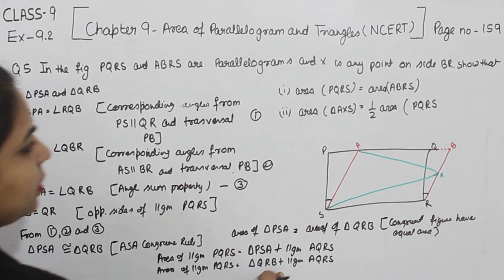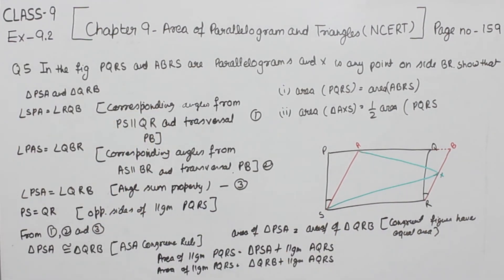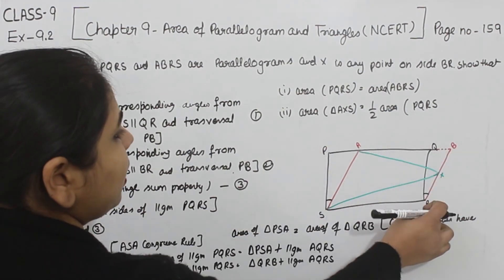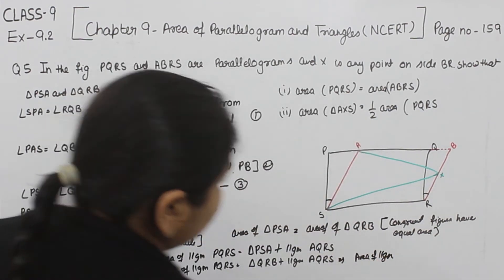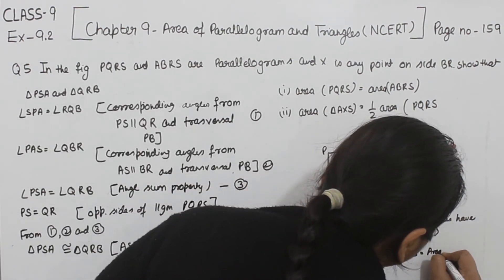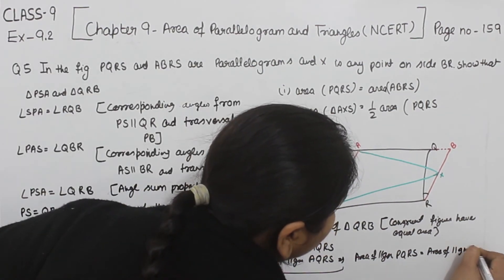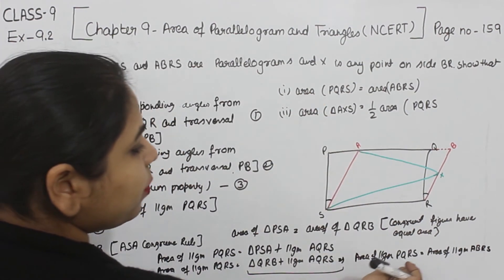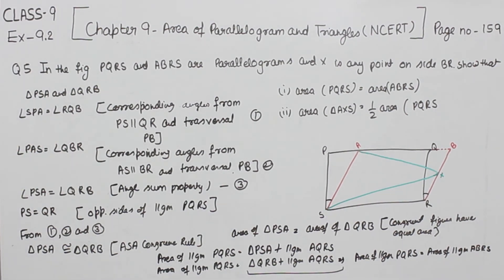Adding triangle QRB and parallelogram AQRS together gives us parallelogram ABRS. Therefore, area of parallelogram PQRS is equal to area of parallelogram ABRS. This is exactly what we had to prove, so we have solved part 1.